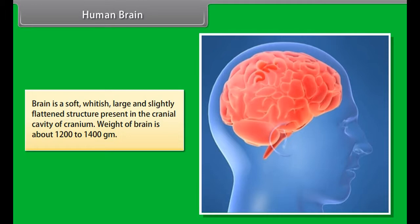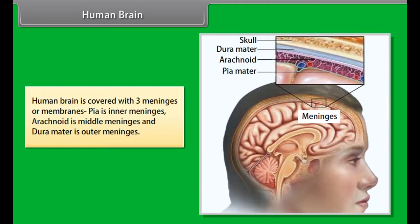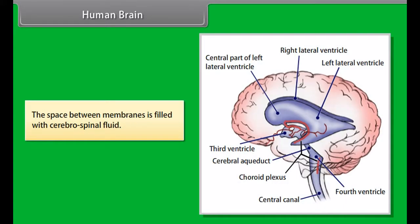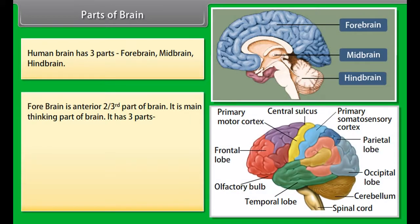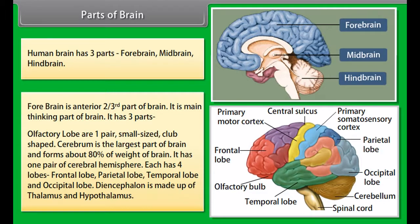On the basis of their functions, neurons are of three types: sensory neurons (found in sense organs), association/relay neurons (found in brain and spinal cord), and motor neurons (also found in brain and spinal cord). Sensory neurons conduct nerve impulses from sense organs to the CNS. Relay neurons receive these stimuli, analyse and interpret them, and produce a message. Motor neurons conduct this message from the CNS to the effectors.